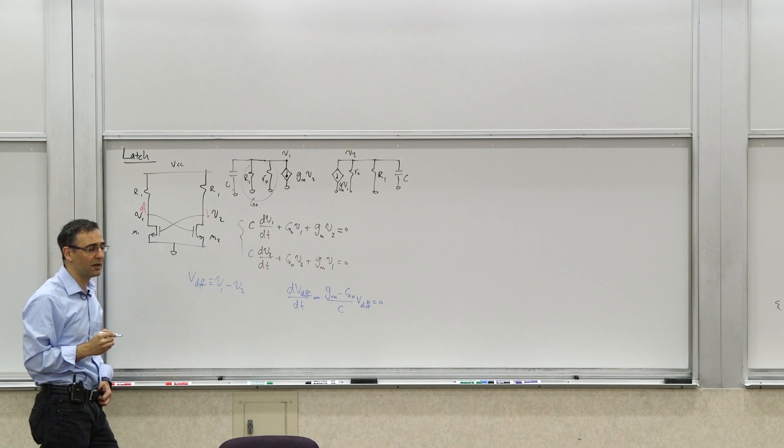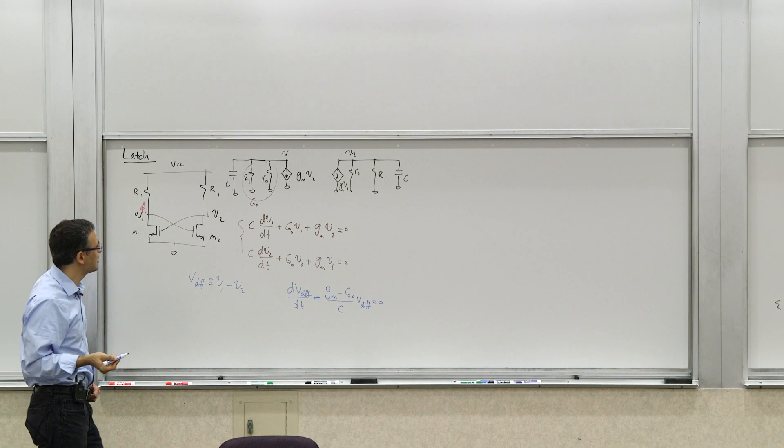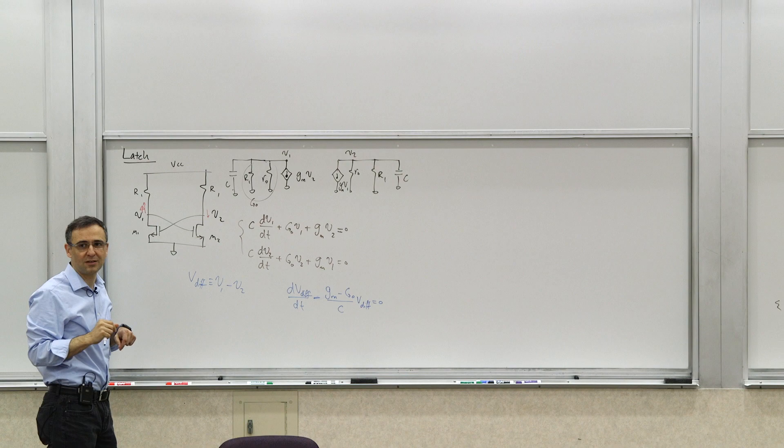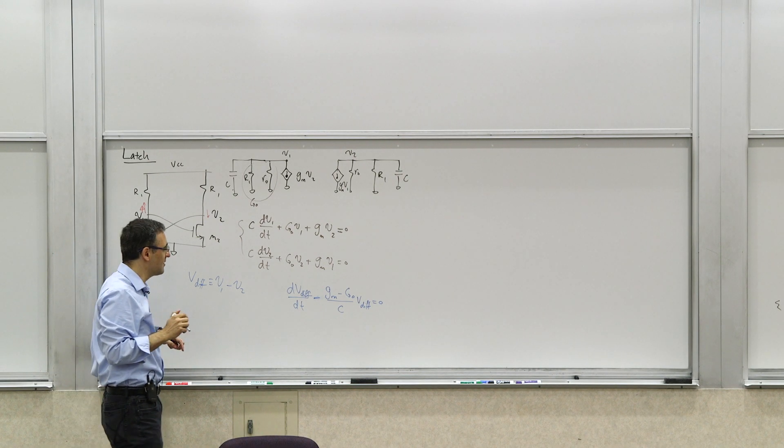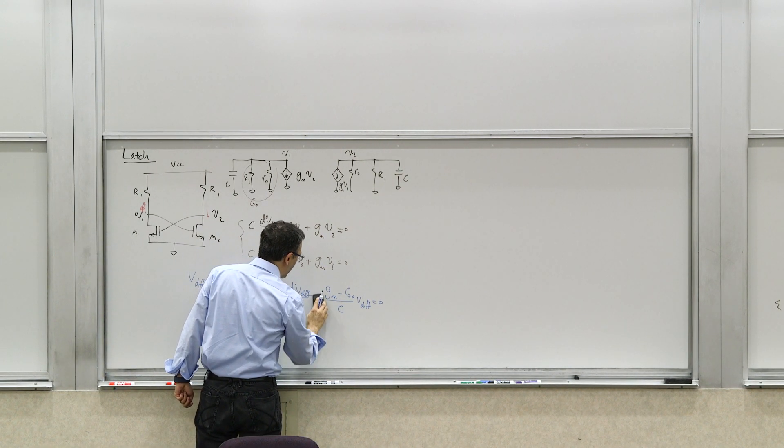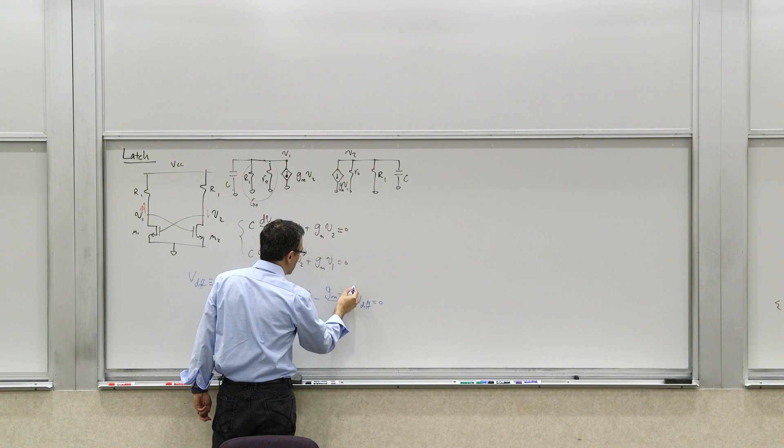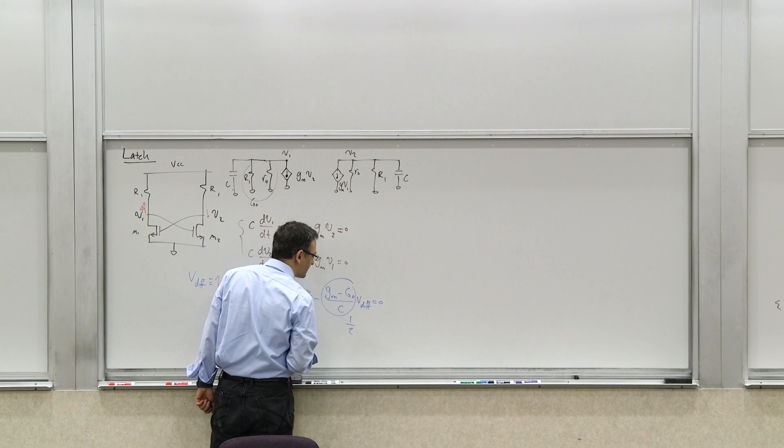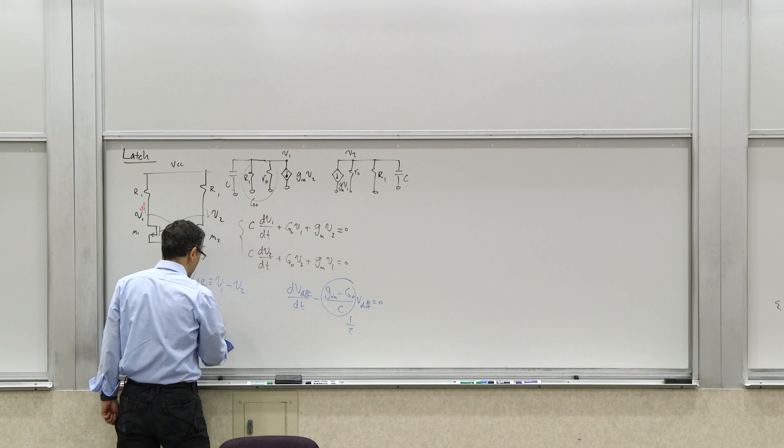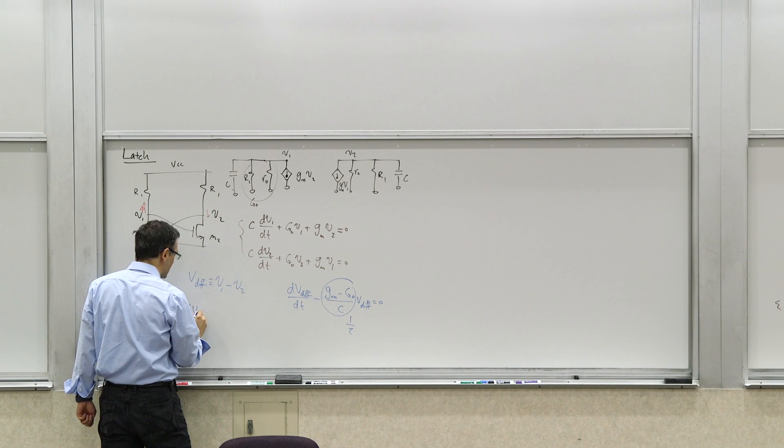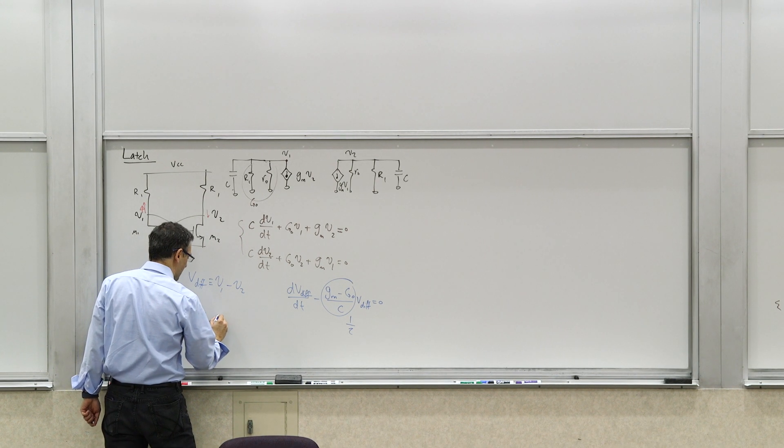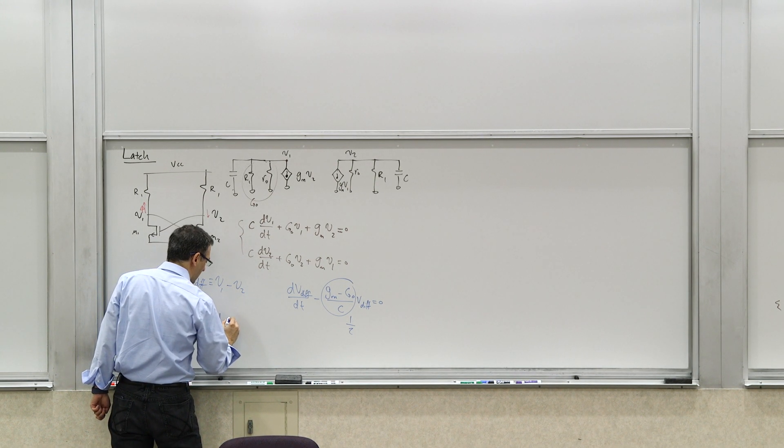So this is a differential equation, the first order differential equation governing the differential voltage, the difference of the V1 and V2. So what you have here is that, and we can call this, this has units of one over time, let's call it one over tau. So you can write even a more simplified form of this thing, or more compact perhaps, dV diff dt plus one over tau V diff equals zero.